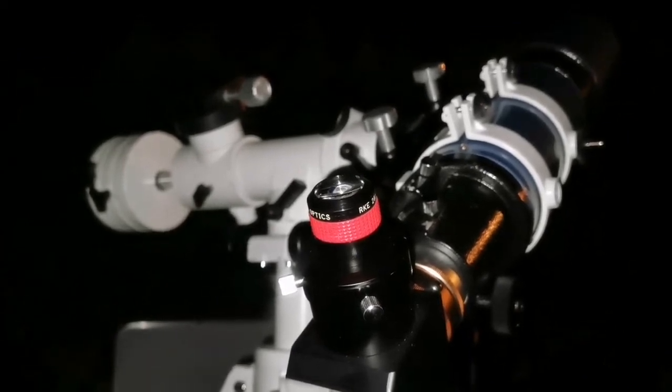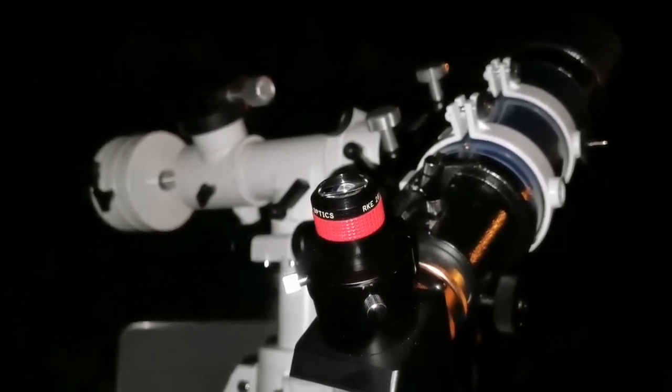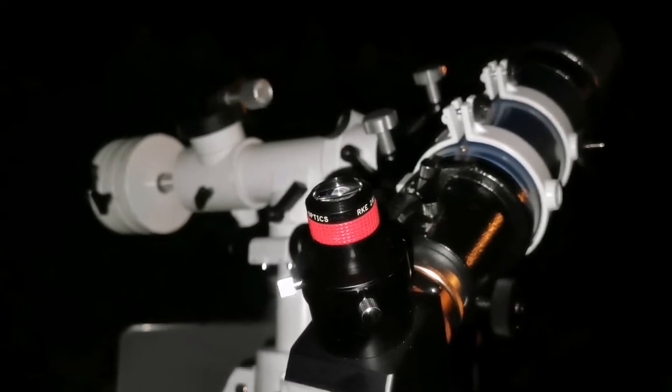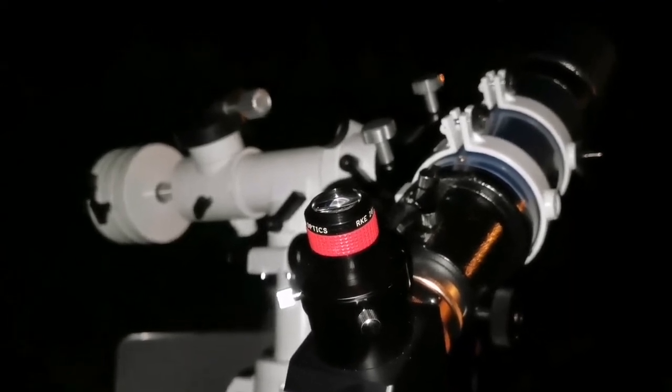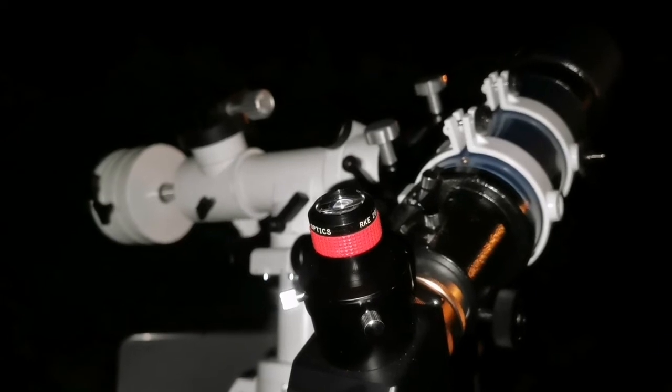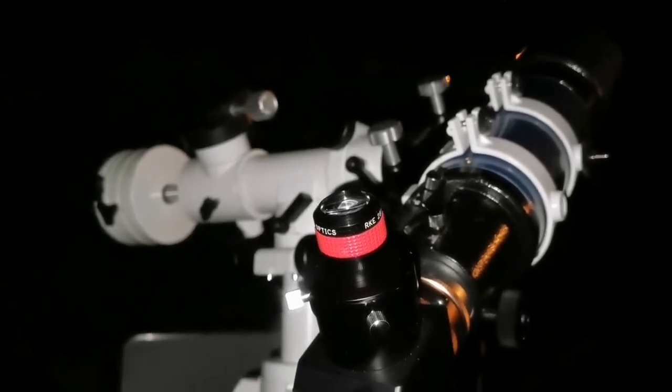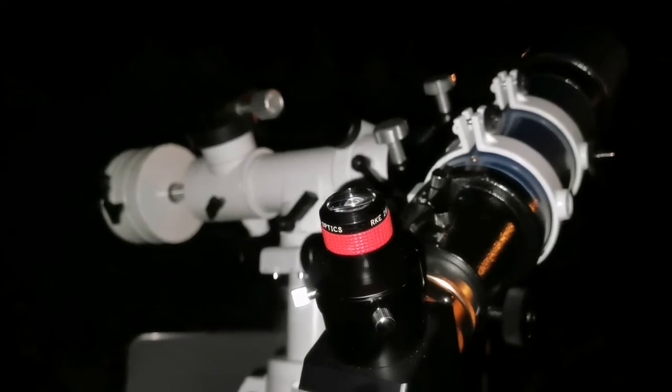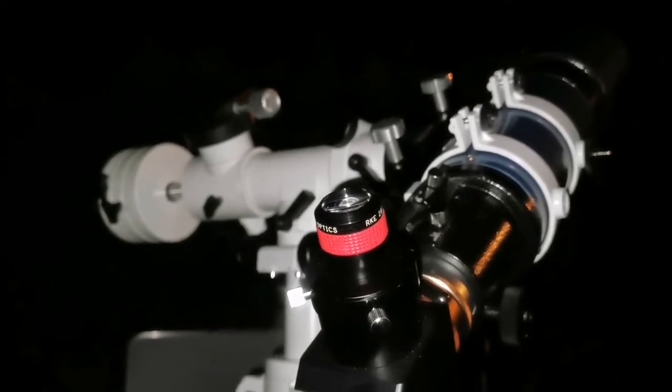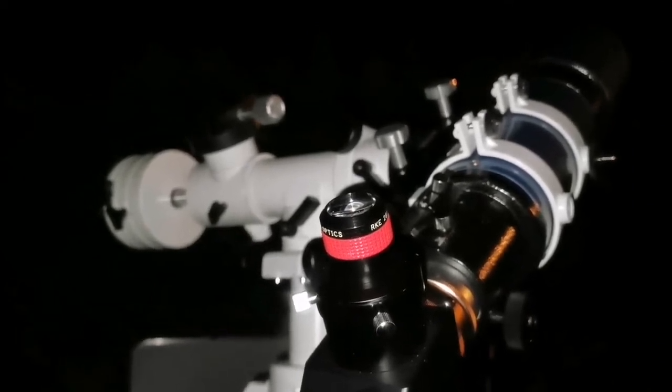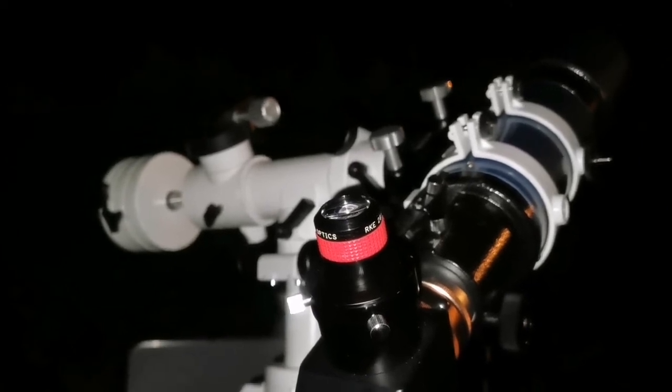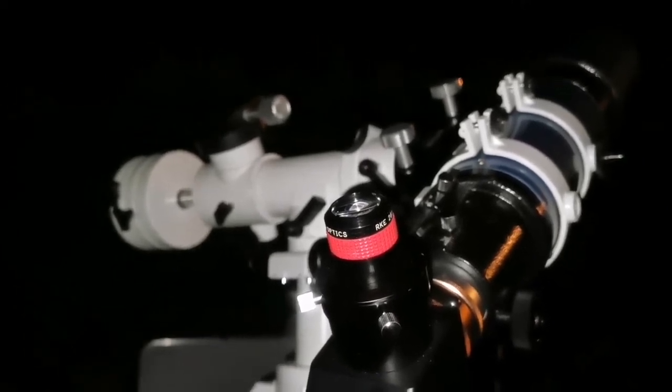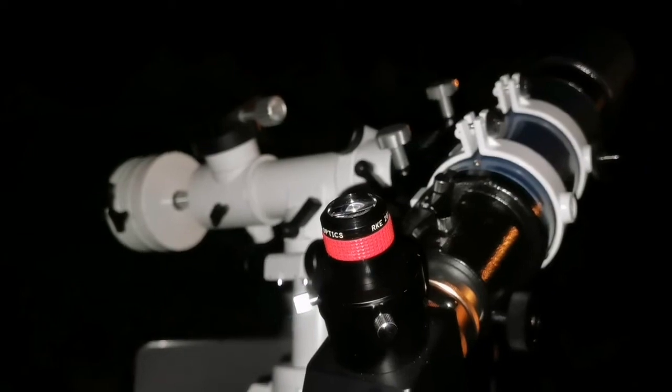M42 great Orion Nebula is most beautiful sight with these two eyepieces and I know that the Tal 25 millimeter plossl, the Russian eyepiece, is also like RKE. That's another amazing eyepiece. If you can get that one, it comes usually with the Tal telescopes and that is amazing. If you can get any of the higher magnification and higher focal length one, that is also good.